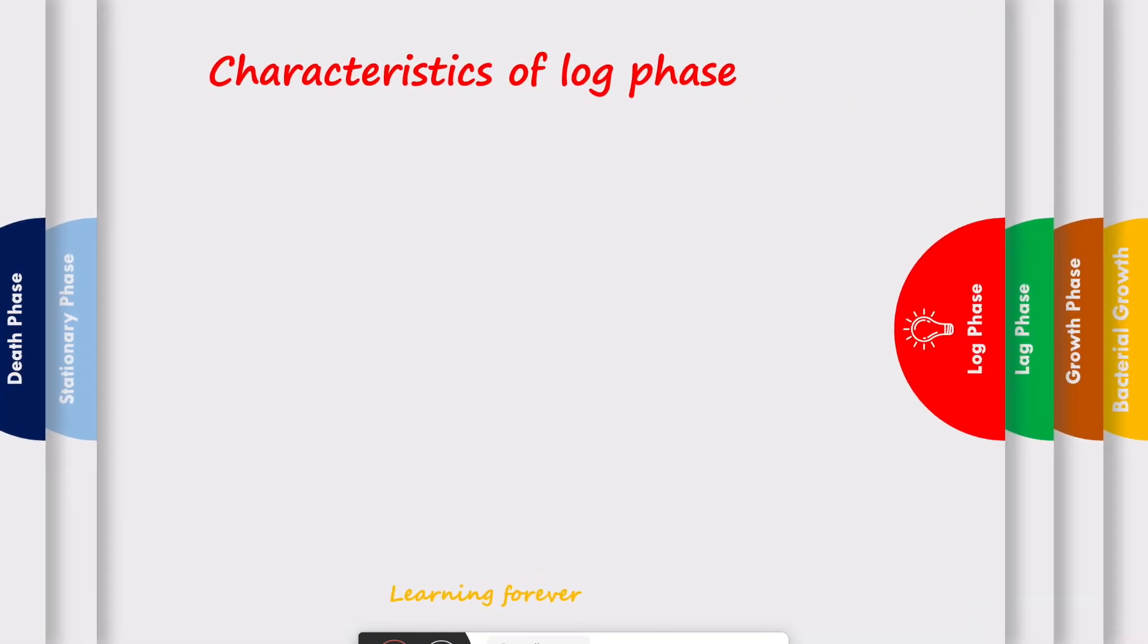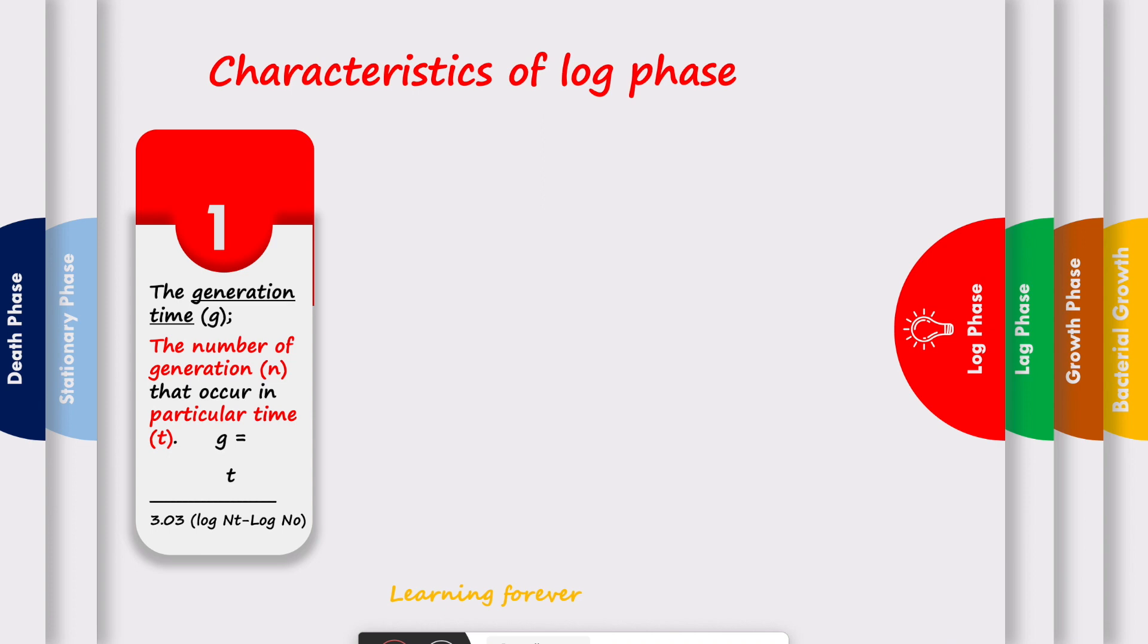Let us see characteristics of log phase. First characteristic is generation time. The number of generations that occur in a particular time is called generation time. Generation time can be mathematically calculated as g equals t divided by 3.03 log of nt minus log of n0. Here g is generation time, t is the time when we measure bacterial population, nt is the number of bacteria at time t, and n0 is the initial number of bacteria.